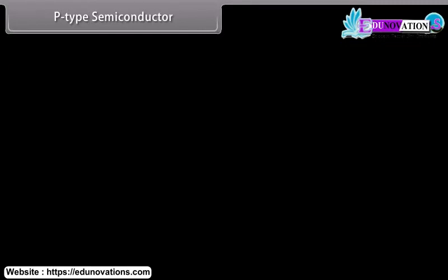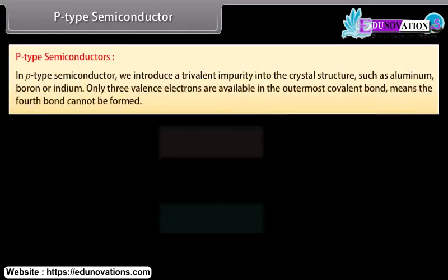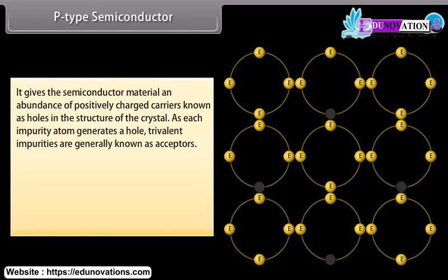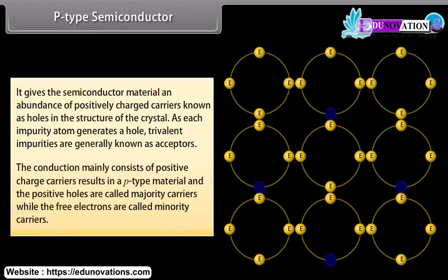In P-type semiconductors, a trivalent impurity such as aluminium, boron, or indium is introduced into the crystal structure. Only 3 valence electrons are available in the outermost covalent bond, so the 4th bond cannot be formed. This gives the semiconductor an abundance of positively charged carriers known as holes. As each impurity atom generates a hole, trivalent impurities are called acceptors. The positive holes are majority carriers while free electrons are minority carriers.